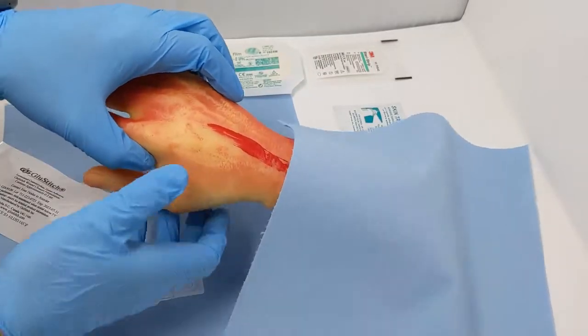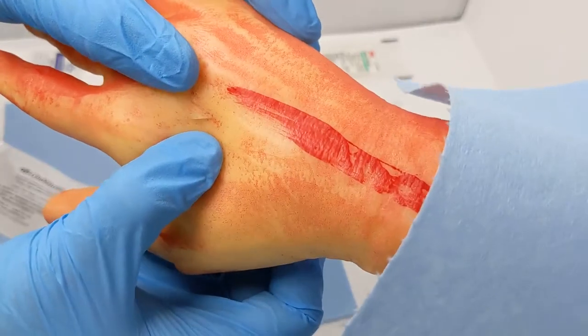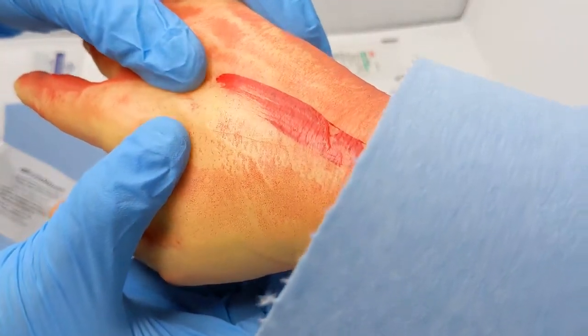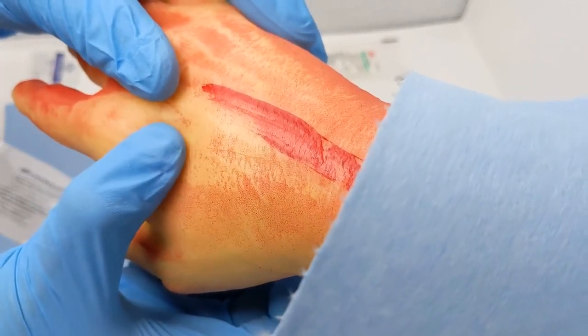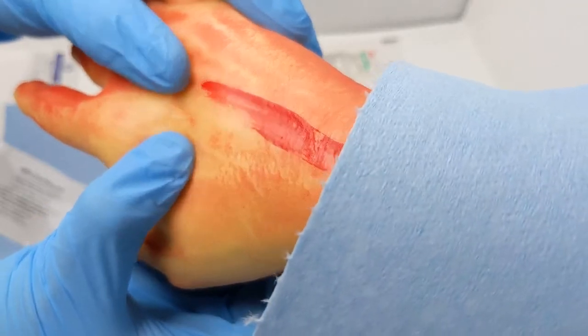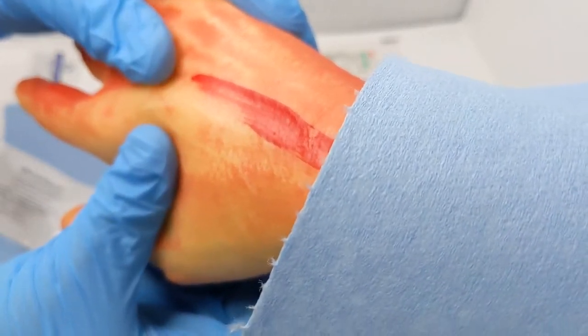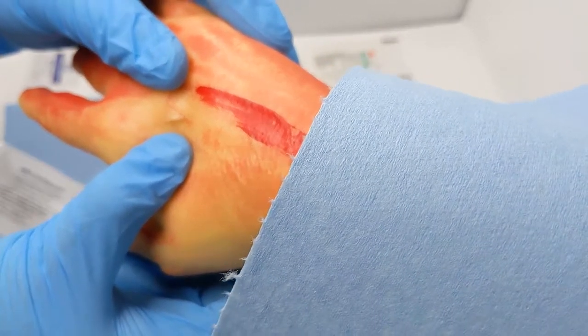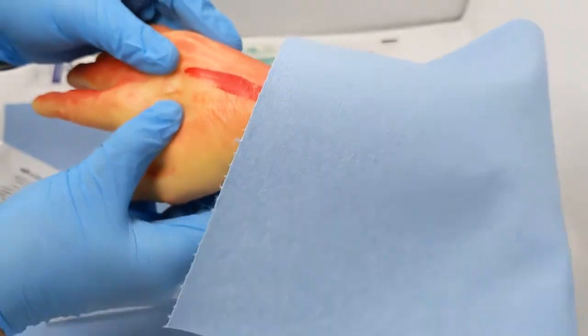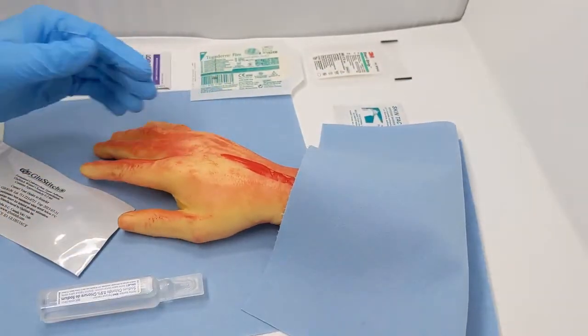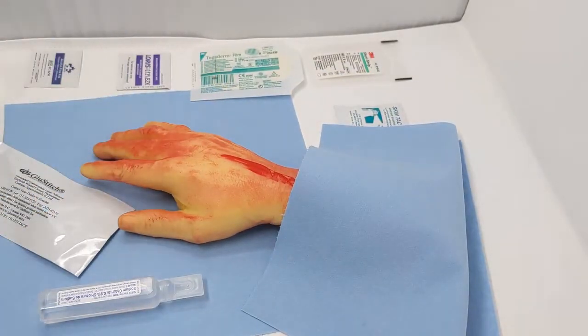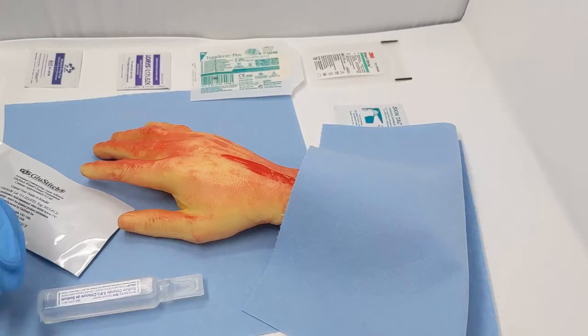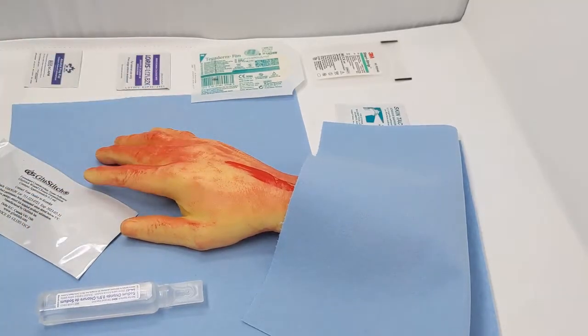Looking at the wound here on the hand, we have a small laceration. It's nice and straight, superficial, no puncture, and no significant contamination. Those would all be times we would not consider gluing. If there was a puncture, lots of contamination, or a deep wound, we would want to leave it open and allow for dirt and drainage to come out. But this one looks uncomplicated.